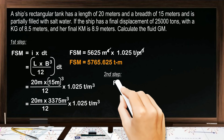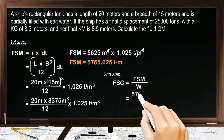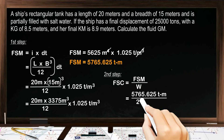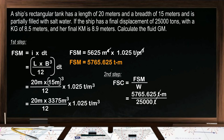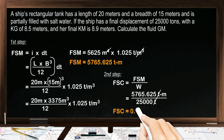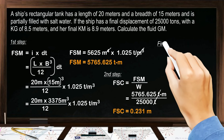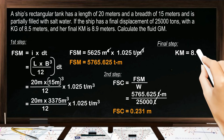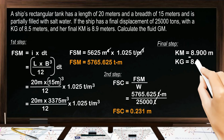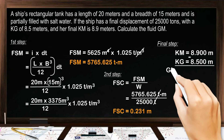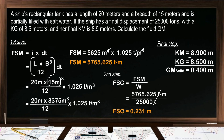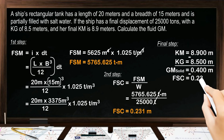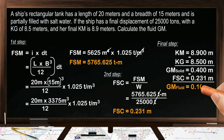Let us now proceed to the free surface correction: 5765.625 ton meter divided by 25,000 tons gives a free surface correction of 0.231 meter. For the initial metacentric height, KM minus KG gives 8.9 meters minus 8.5 meters, so the solid GM is 0.400 meter. Subtracting the free surface correction of 0.231 meter, the fluid GM is 0.169 meter.